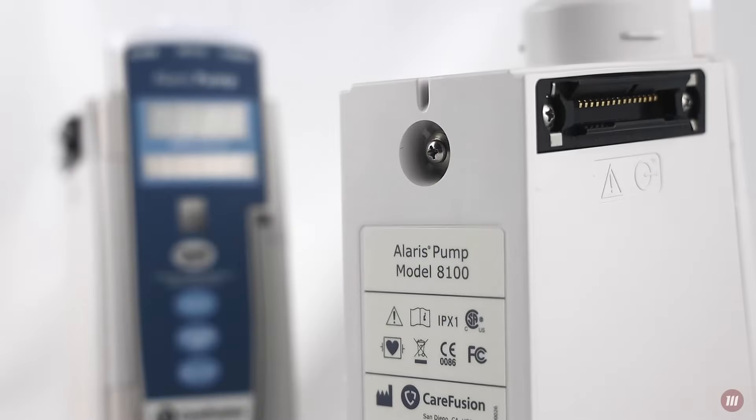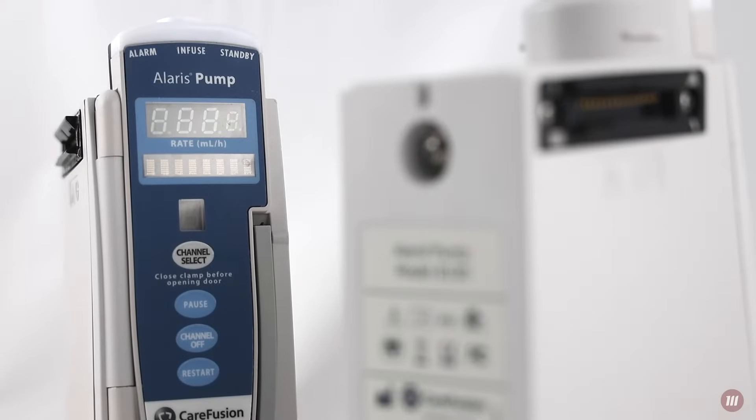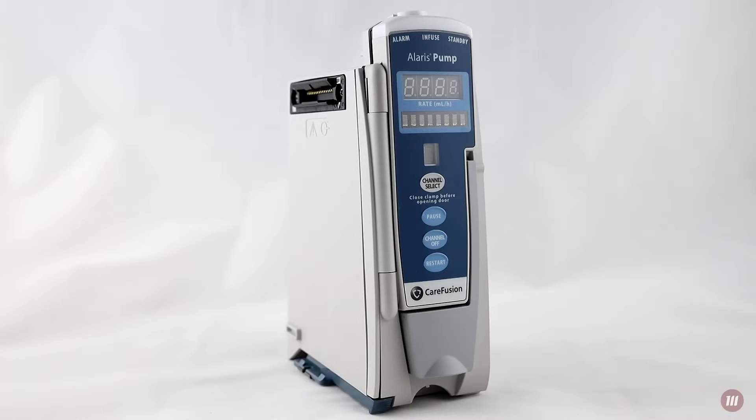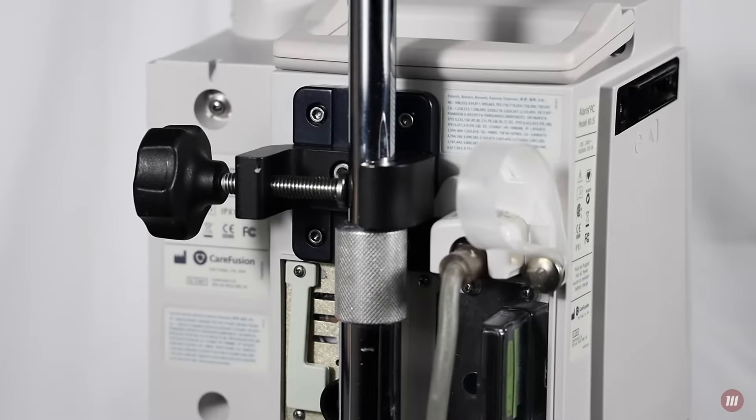The 8100 module is also called the LVP or large volume pump module. It can be mounted to an IV pole with the adjustable clamp found on the back of the point-of-care unit.